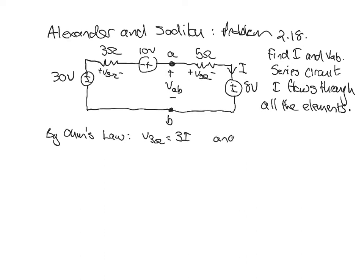The voltage drop across the 5 ohm resistor equals 5 ohms times I. Now we can use Kirchhoff's voltage law because we only have one unknown, I. We're going to start in this corner and proceed around the circuit.